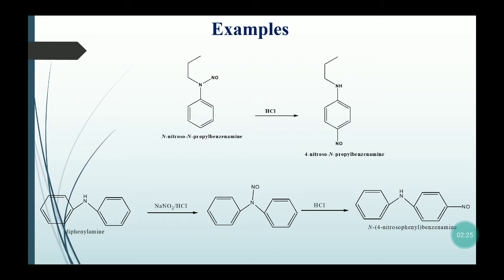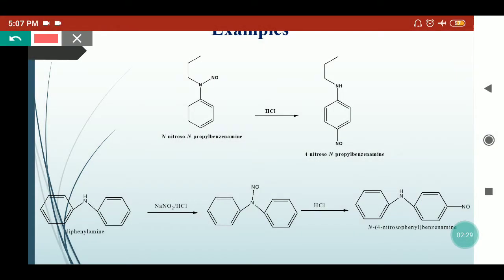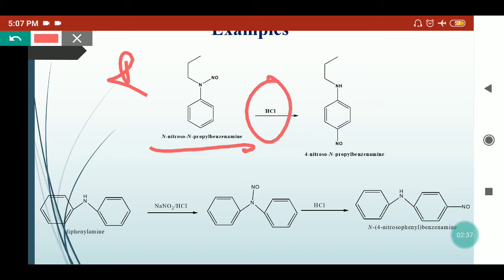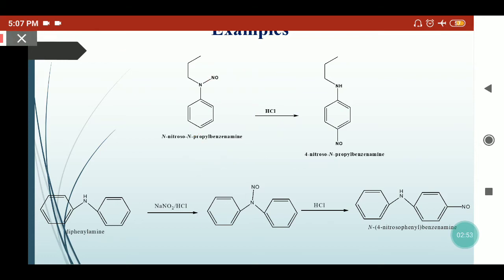Now looking at some examples: when we replace the R group with a propyl group, we have N-nitroso-N-propyl benzylamine. In the presence of hydrochloric acid, the H⁺ ion goes to the nitrogen, and in the next step Cl⁻ attacks the nitroso group. Nitrosyl chloride is released and attacks the para position, giving para-nitroso-N-propyl benzylamine as the product.